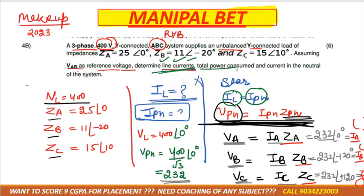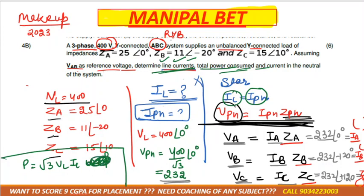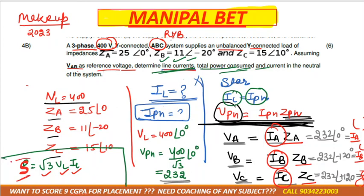The next part asks for total power consumed. The formula is: Total apparent power S = √3 × VL × IL × cosφ. Since we have different line currents, use the magnitudes only — never take the angle in power calculations. VL is 400V and IL is whatever magnitude you calculated. If needed, active power and reactive power can also be calculated.